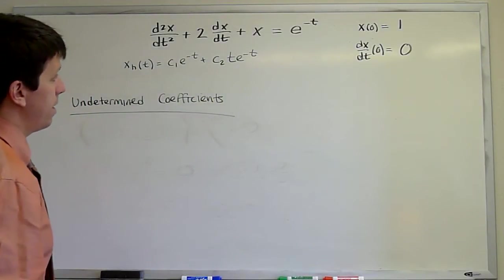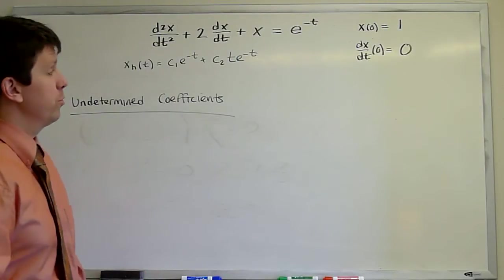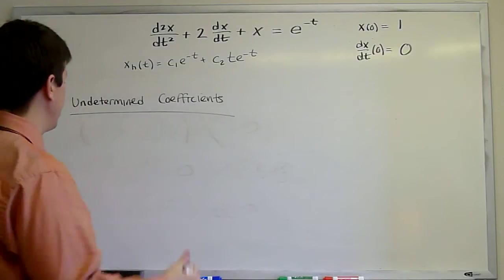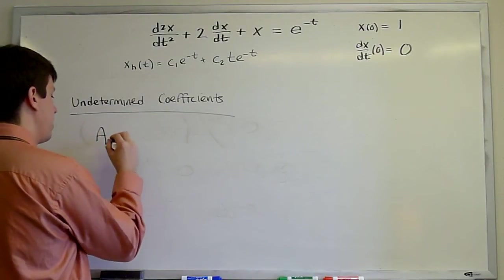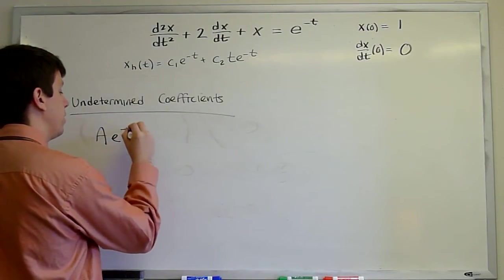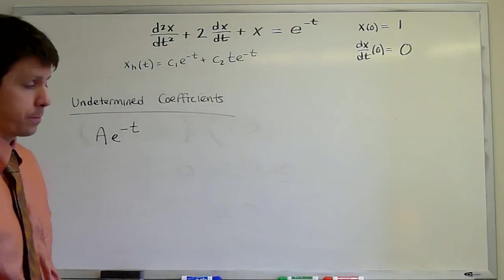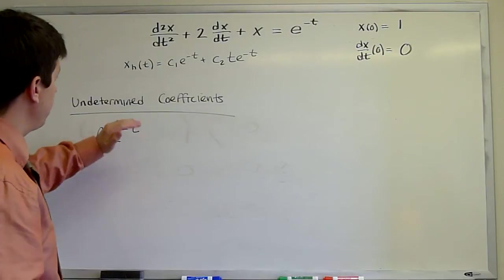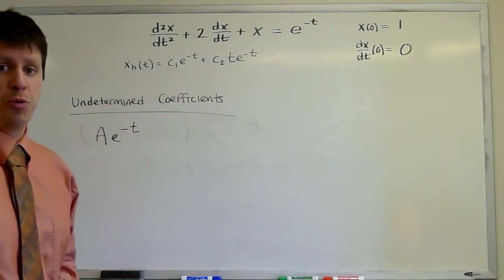The naive guess for undetermined coefficients would be I have a simple exponential and derivatives preserve the form of that exponential. So I'll simply guess a e to the minus t. However, that guess will not work because e to the minus t is itself a solution to the homogeneous problem.